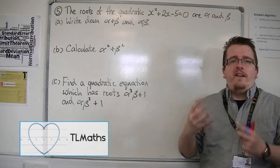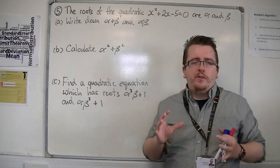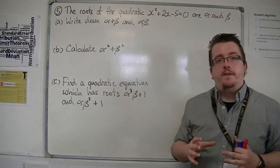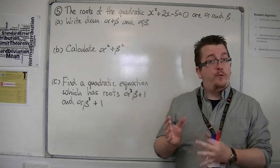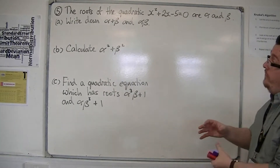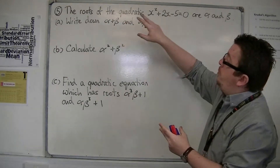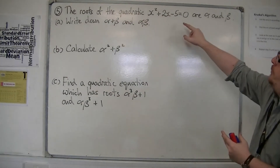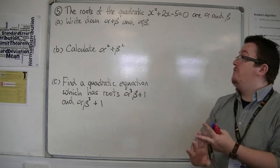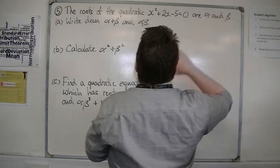This is the FP1 January 2013, question 5. This is on the roots of quadratic equations. We're told that the roots of the quadratic x squared plus 2x minus 5 equals 0 are alpha and beta.